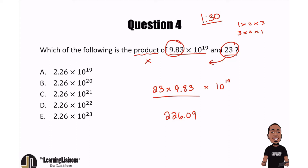When you look at your answer choices, they're all three digits, so I'll go ahead and just forget about the .09 for now. Let's bring down that 10 to the power of 19, so that's going to be multiplied by 10 to the power of 19. From here, this is where the tricky part comes, because we want to make sure that we write this in scientific notation with one digit in the ones place and then the decimals.